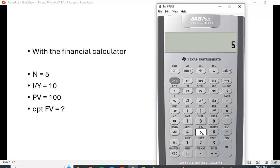So we just type in five is N. You see an equal sign, so we know it's registered. You put in the interest rate as a whole number, so 10 for 10%. You don't put in 0.10. I/Y. The PV is 100, and then we just hit CPT for compute, FV, and we get that 161.05.